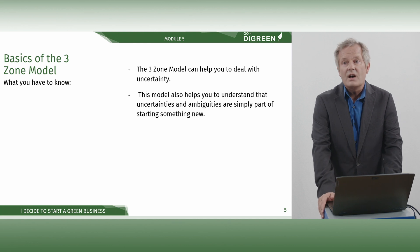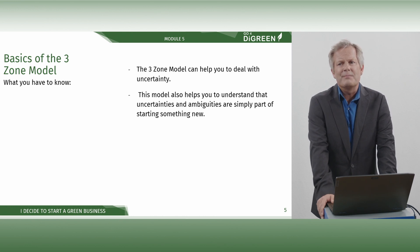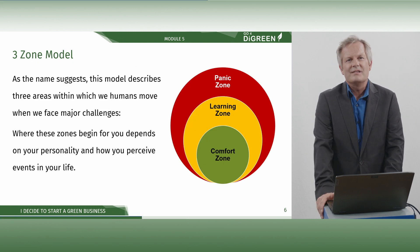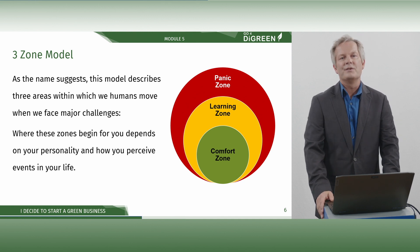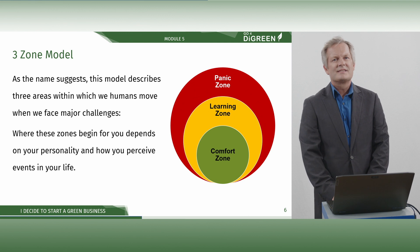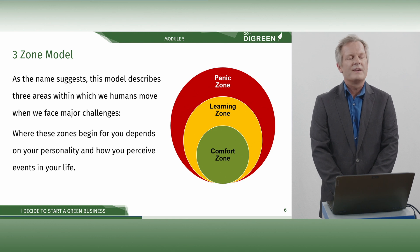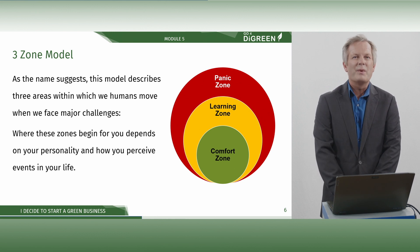The three-zone model can help you to deal with uncertainty. This model also helps you to understand that uncertainties and ambiguities are simply part of starting something new. Our first model deals with exactly this topic. It is called the three-zone model and was originally developed by Juergen Dodson. As the name suggests, this model describes three areas within which we humans move when we face major challenges. Where these zones begin for you depends on your personality and how you perceive events in your life.